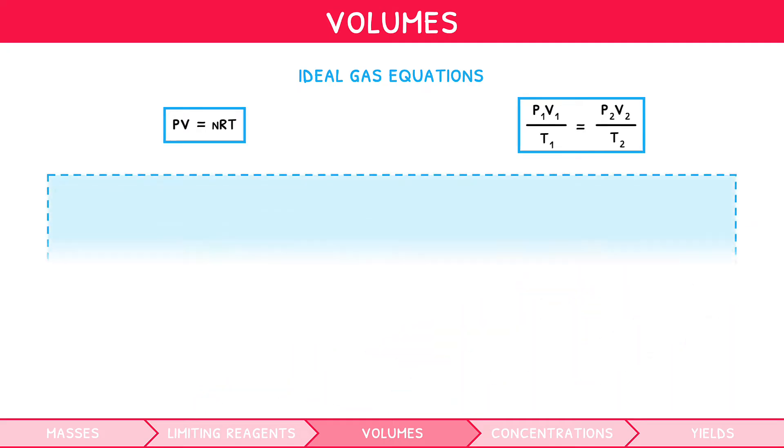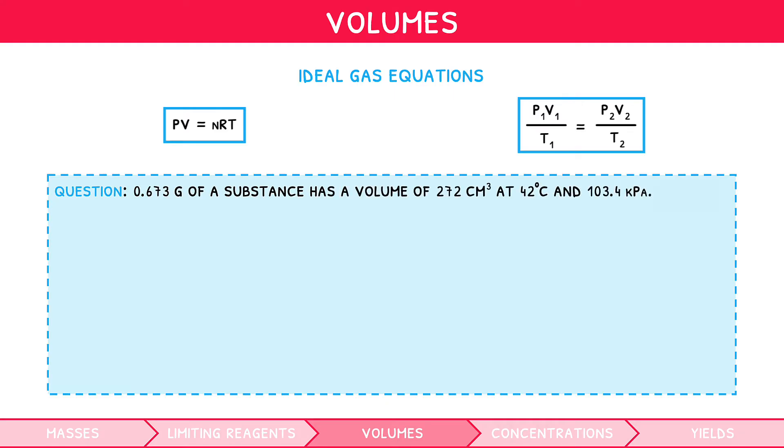Let's look at the second example. 0.673 grams of a substance has a volume of 272 centimetres cubed at 42 degrees Celsius and 103.4 kilopascals. What is its molar mass? The equation to use here is PV equals nRT. Remember, in this equation, not only must temperature be in Kelvin, but pressure must be in pascals and volume in metres cubed. So, after some rearranging, we can see the moles of the substance is 0.0107. Then, using the formula RAM equals mass divided by moles, we can find the RAM, which is 62.64. These equations are slightly more tricky than the simple moles and volume calculations, so you should practise them further on our question pages.